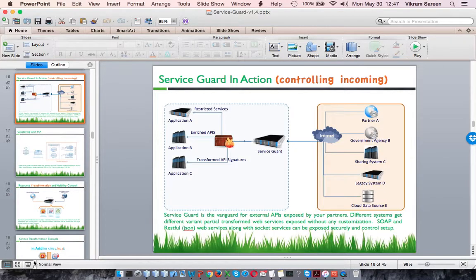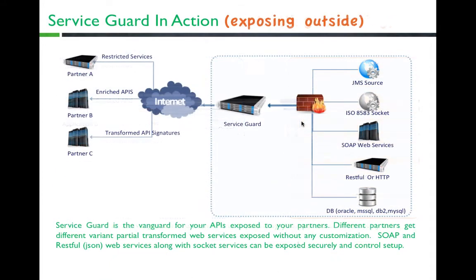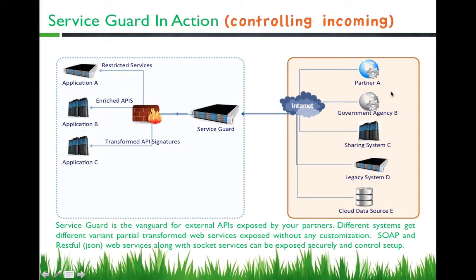To quickly give you a few pointers on the different types of features: one key thing to highlight is resources and access points. Traffic going outward means you want to expose certain APIs — ISO 8583, SOAP, or RESTful — protect and transform them, and expose them to partners. The other scenario is where outside partners, agencies, or businesses provide services you want to bring into your internal applications. In both contexts, ServiceGuard helps with outgoing as well as incoming APIs.